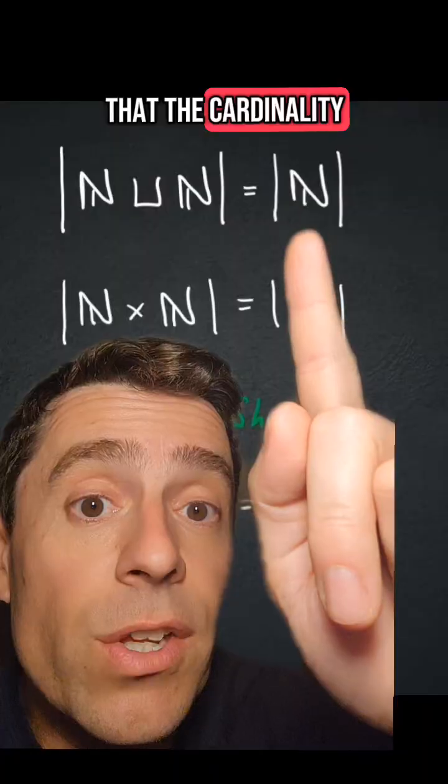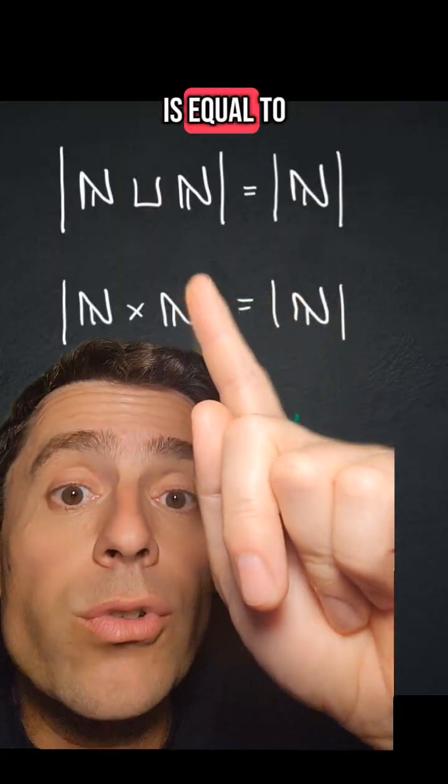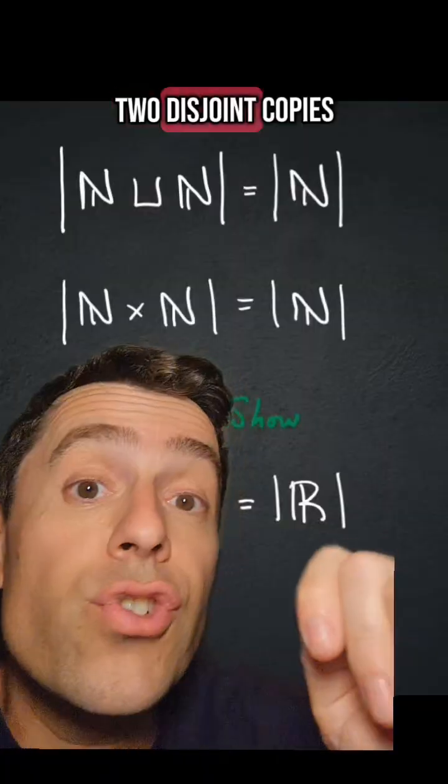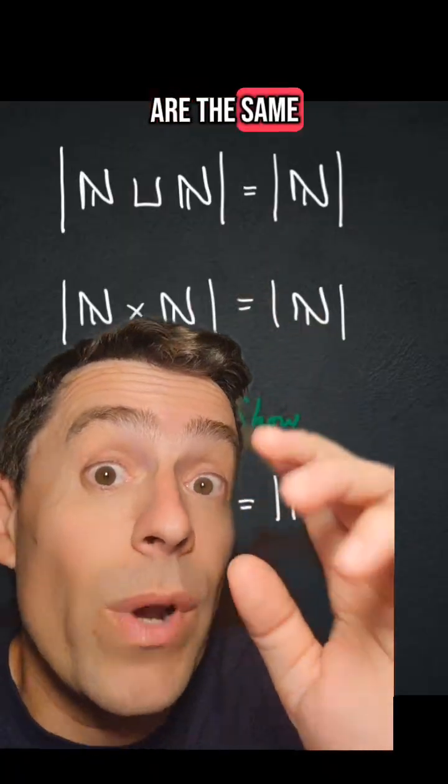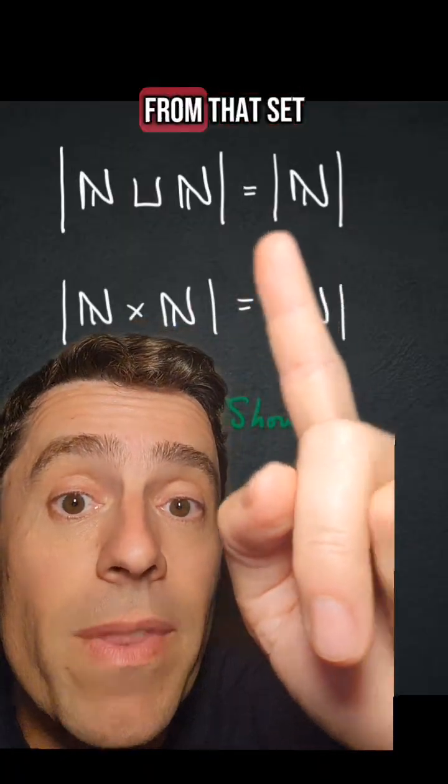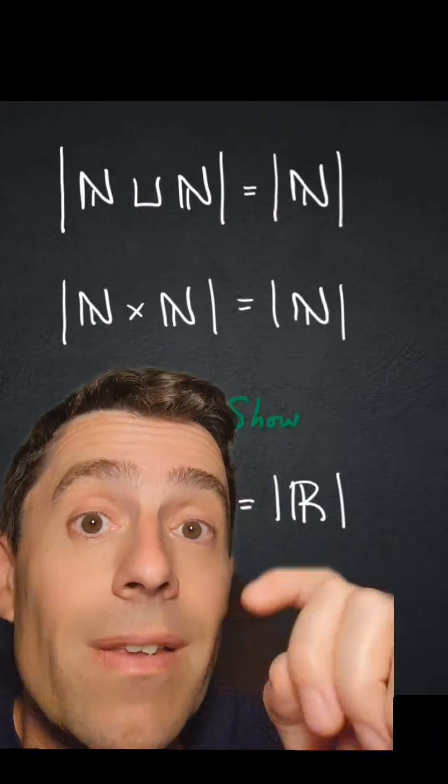So I want you to prove that the cardinality of the natural numbers is equal to the cardinality of two disjoint copies of the natural numbers. And whenever I say two cardinalities are the same, what I want is a bijection from that set to that set.